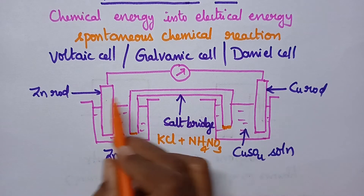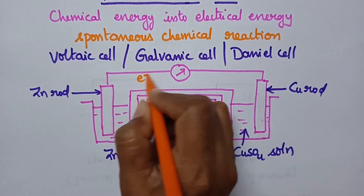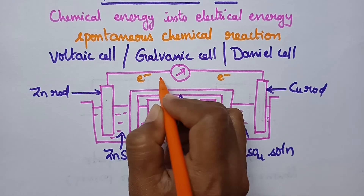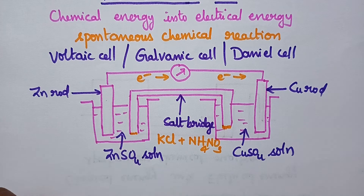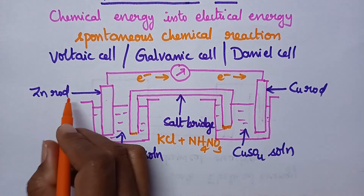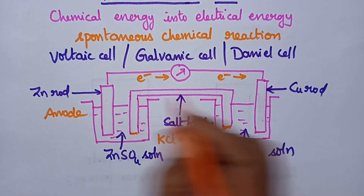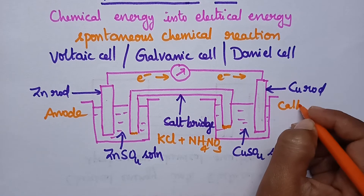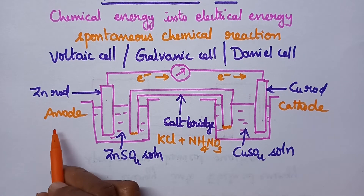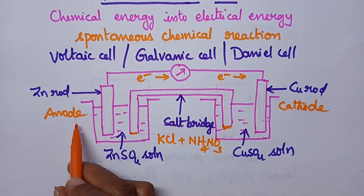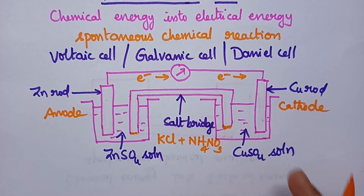These two electrodes are connected through a voltmeter, and the deflection in the voltmeter shows the direction of flow of electrons. Zinc rod acts as the anode, whereas the copper rod acts as the cathode. Always at the anode, oxidation takes place, and at the cathode, reduction takes place.